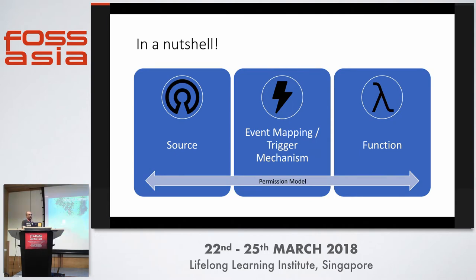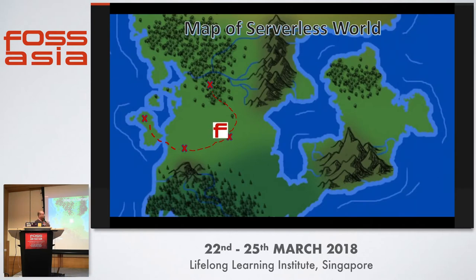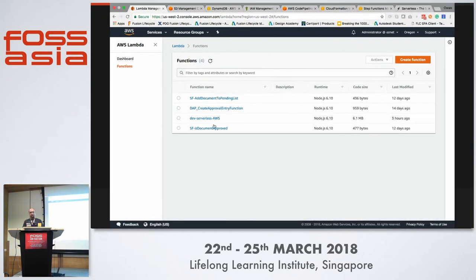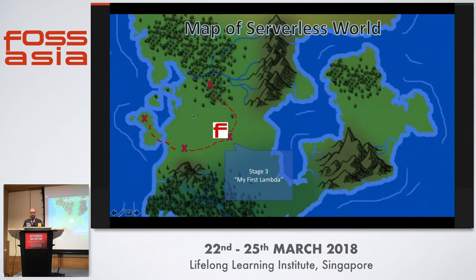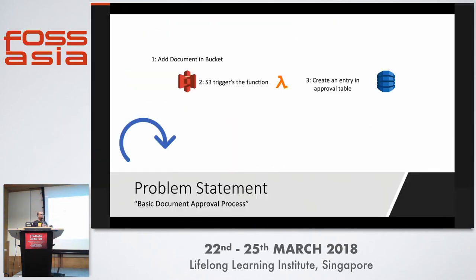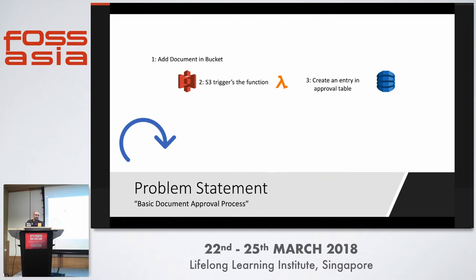Now we have a basic idea, so we can go to the third stage: creating our first Lambda. The demo problem is a simple one — you add a document to S3, which triggers an event that your Lambda function receives, and then it creates an entry in an approval table. This is a very basic document approval solution: you put your documents in S3 and a corresponding entry is made in the table so that approvers can see what documents they want to approve or reject.